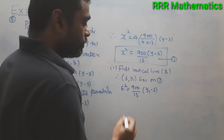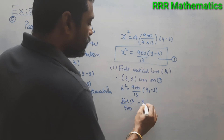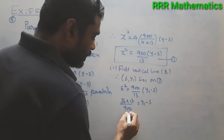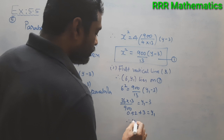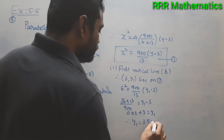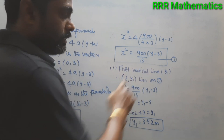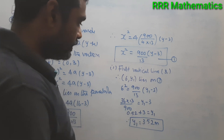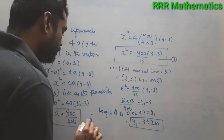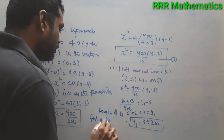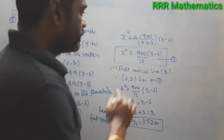Substituting x = 6: 36 = (900/13)(y₁ − 3), so y₁ − 3 = (36 × 13) / 900 = 0.52, therefore y₁ = 0.52 + 3 = 3.52 meters. The length of the first vertical line is 3.52 meters.